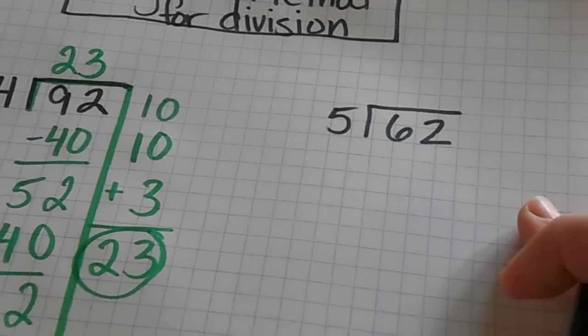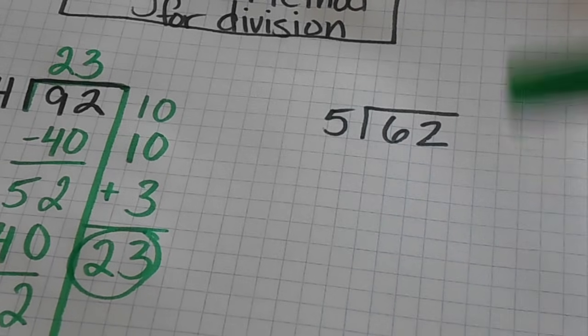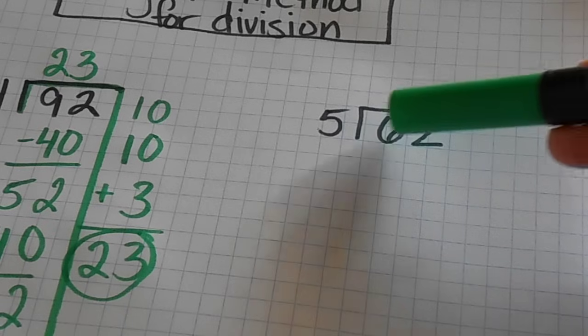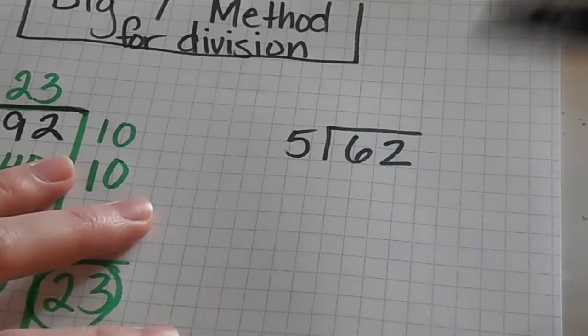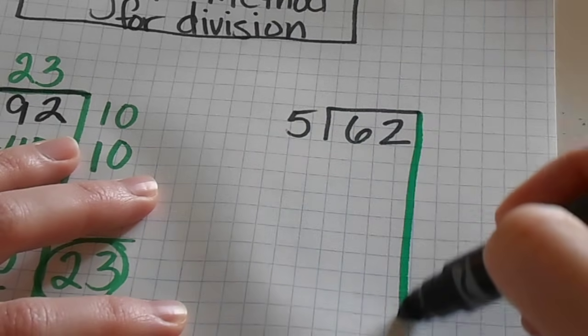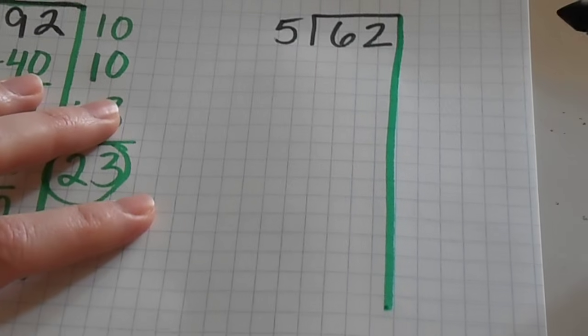Now it also works for problems that have remainders. For example, this one will have a remainder. 62 is not evenly divisible by five. So again, I'm going to draw my line down the side, make my big seven.